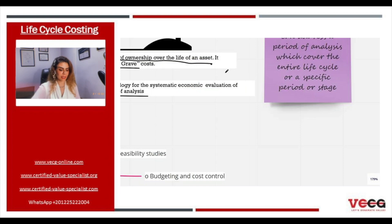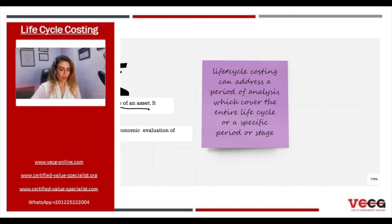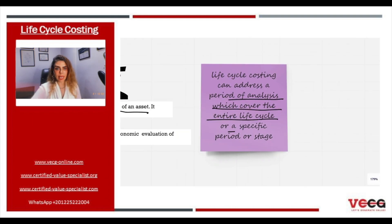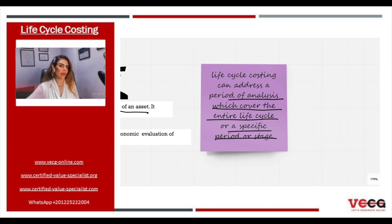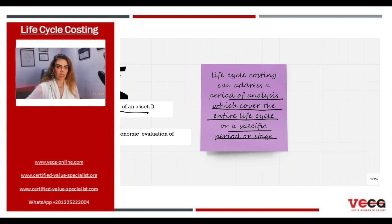Life cycle costing can address a period of analysis which covers the entire life cycle or a specific period or stage. We can calculate the life cycle costing of an alternative during a specific duration — the first 10 years, the first 20 years, and so on — or during the entire life cycle of a project if it was designed to serve the community for 50 years. That duration represents the life cycle.